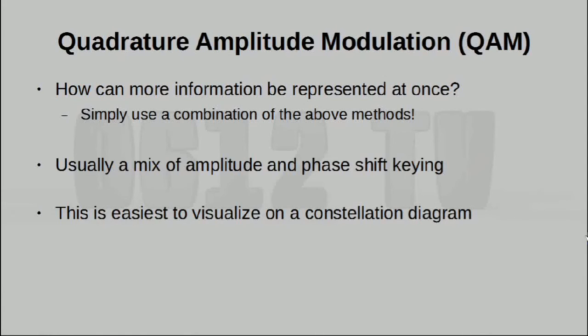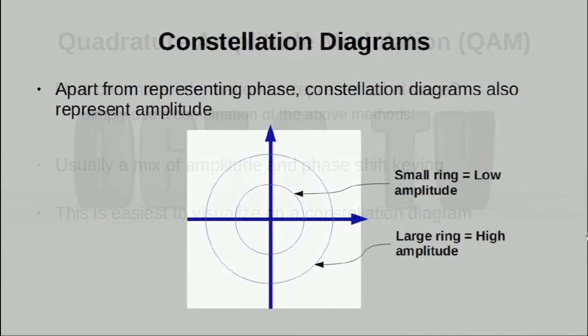This is called Quadrature Amplitude Modulation, and it's usually a mix of amplitude and phase shift keying. This is where a constellation diagram really comes in useful, because explaining this in words can be extremely difficult. We have already seen how an angle on a constellation diagram represents phase, and earlier on we've said that we should just put everything on the same circle. Well, in fact, the size of a circle actually has its meaning. The smaller a ring is, the lower the amplitude of the signal. And that is why when we're combining amplitude and phase shift keying, we actually start to make use of the entire area of the graph.